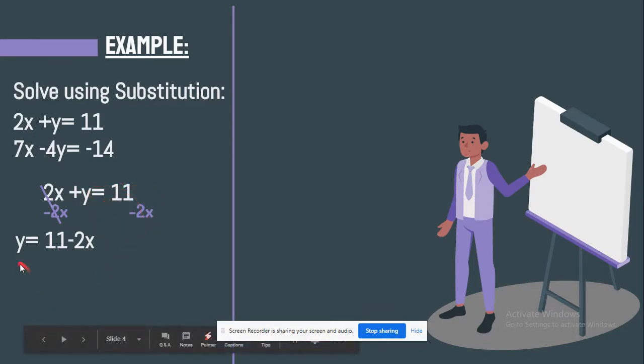The next step is what you're going to do is you're going to take that number. That's the value of y. And then you're going to plug it back onto the other equation, which is here. So it's going to look like this: 7x minus 4, opening bracket 11 minus 2x, closing bracket equals negative 14. Before you get confused all I did is just plug that number here on y.